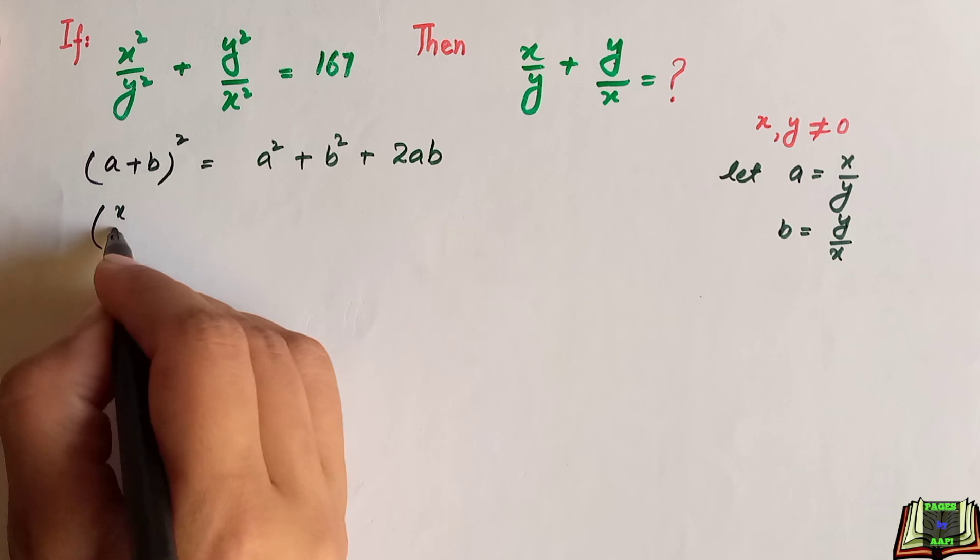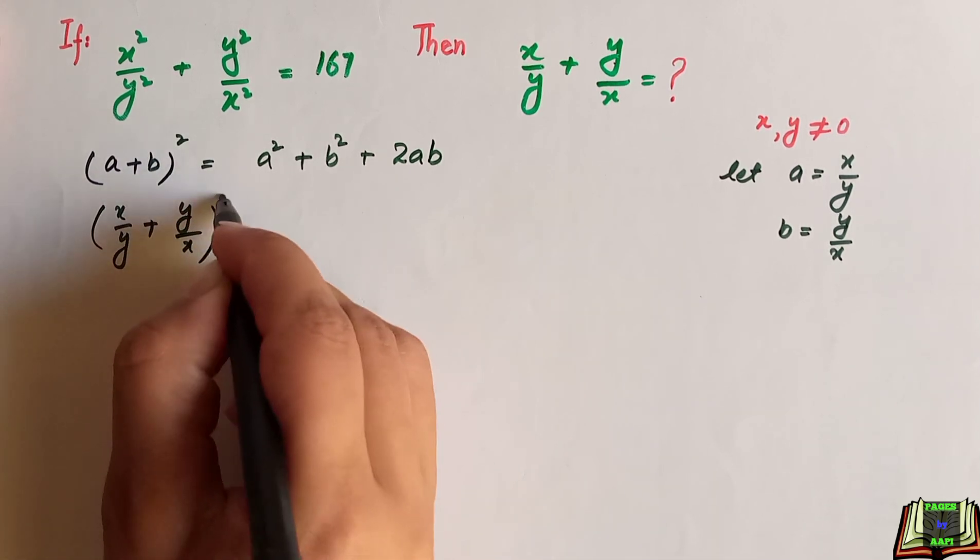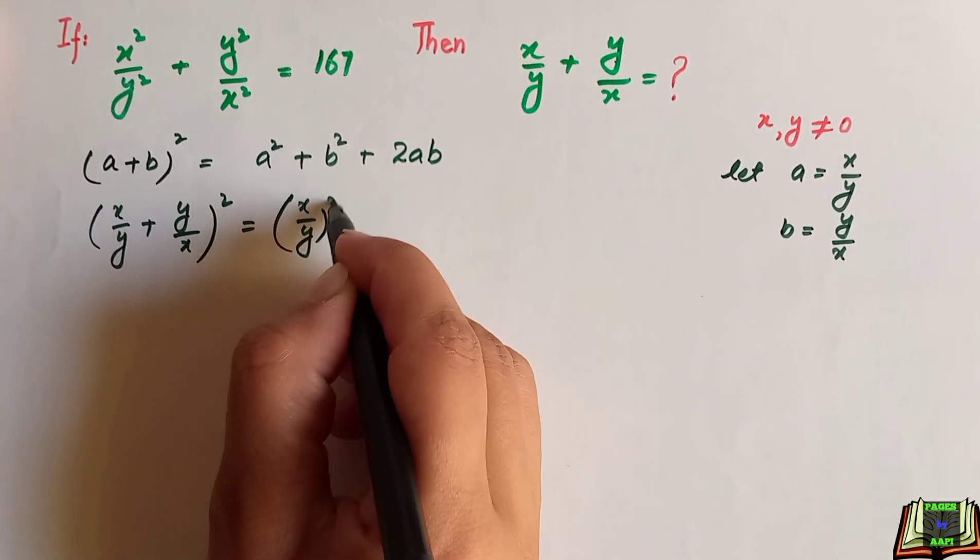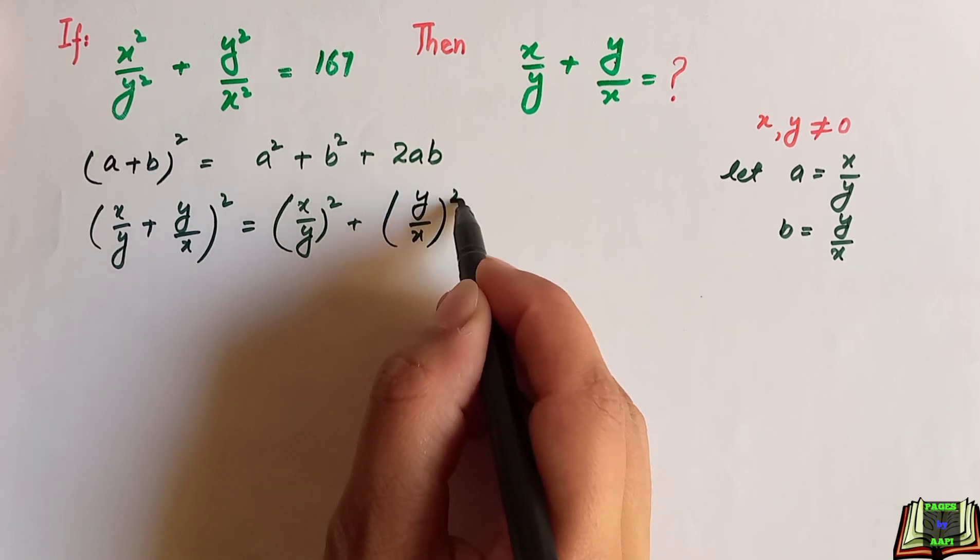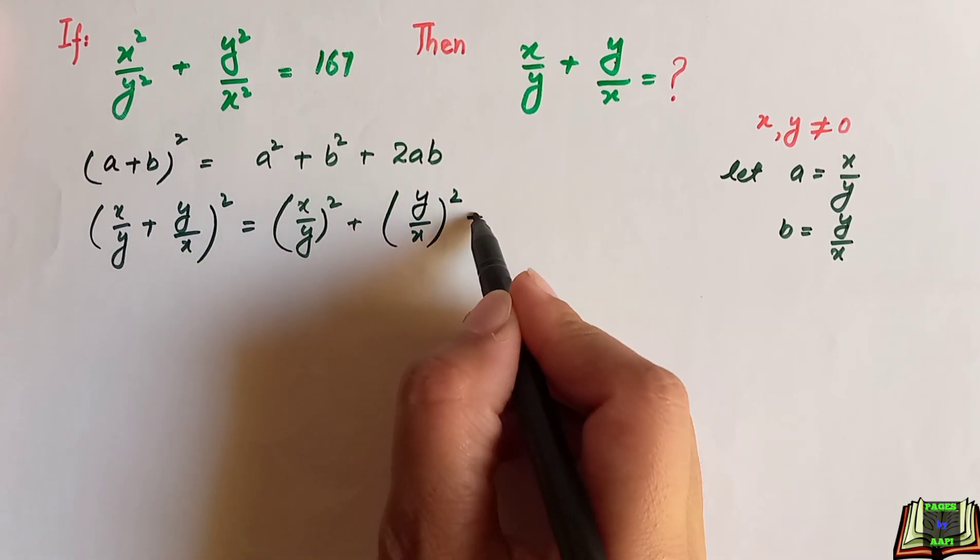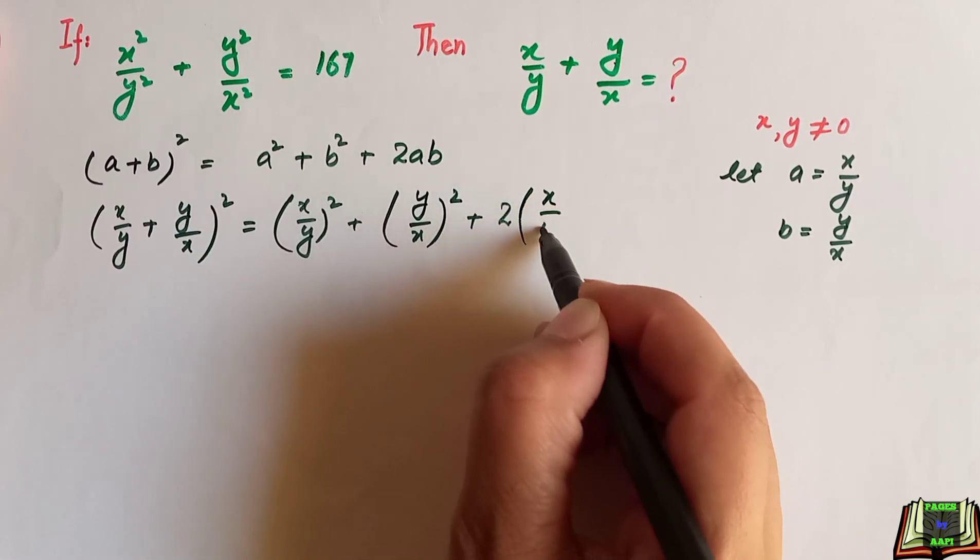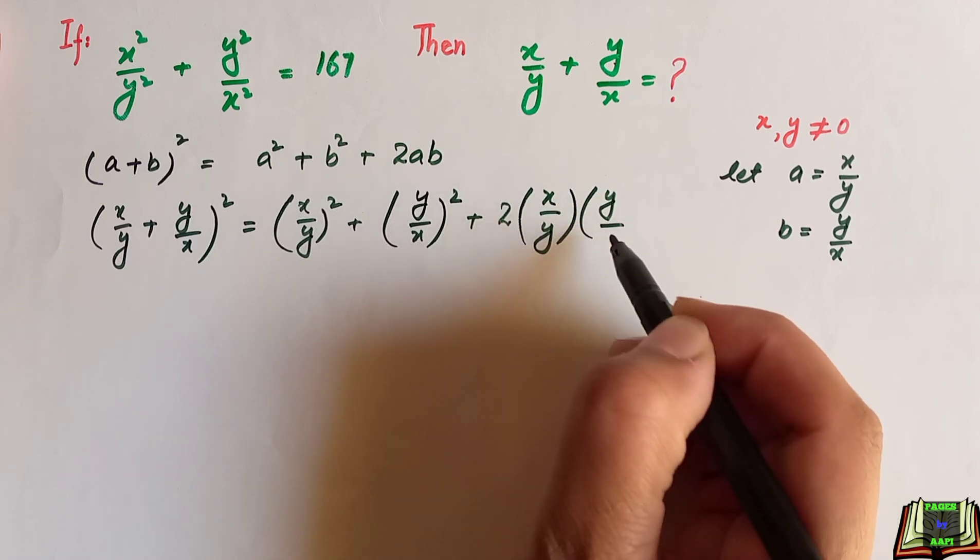So it will become x divided by y plus y divided by x whole square is equal to x divided by y whole square plus y over x whole square plus 2 into x divided by y into y divided by x.